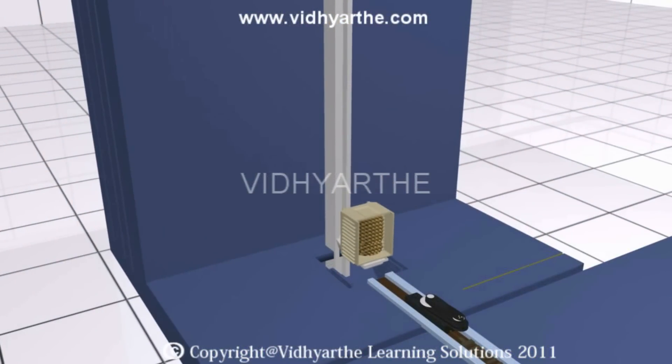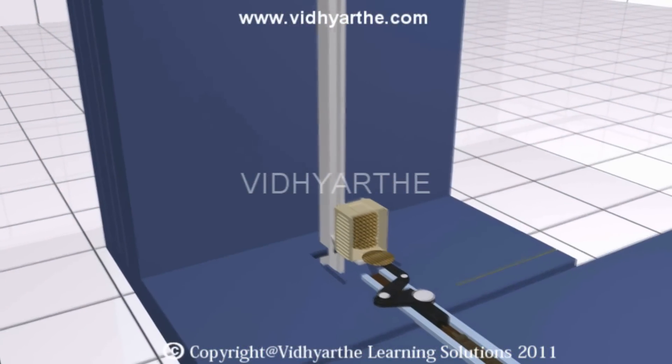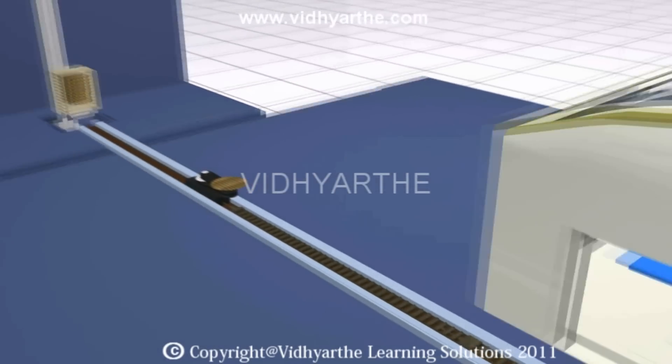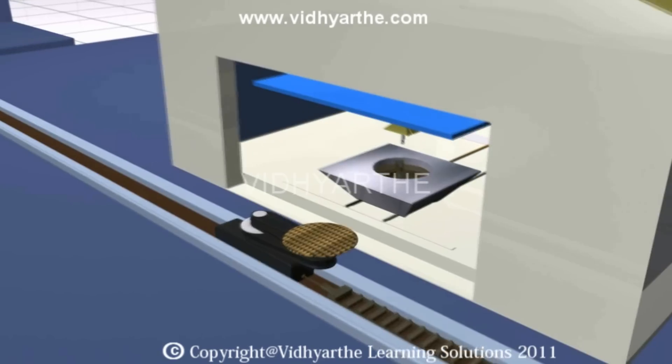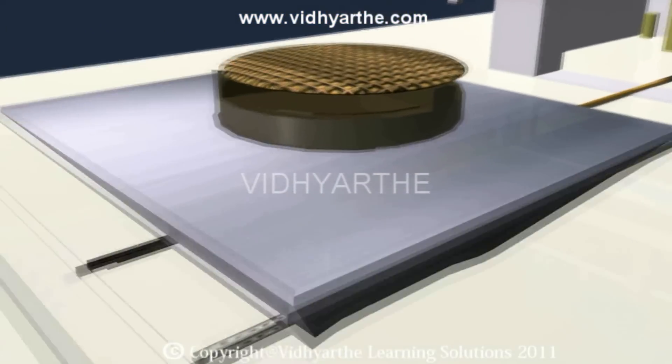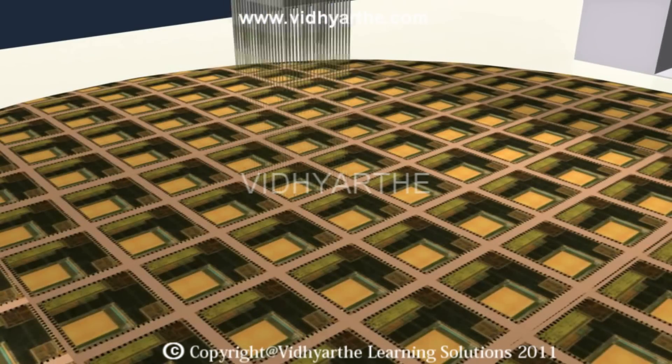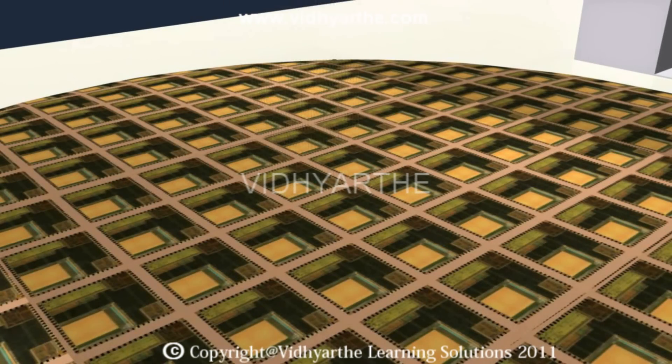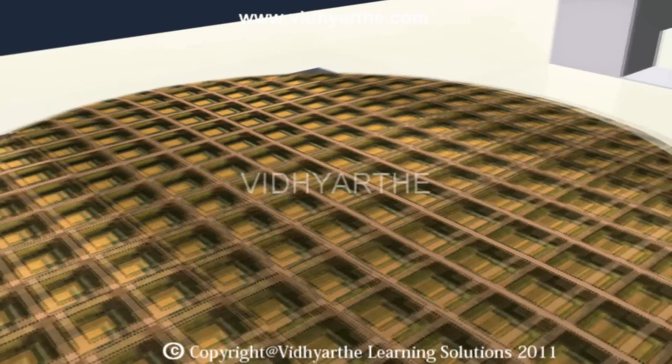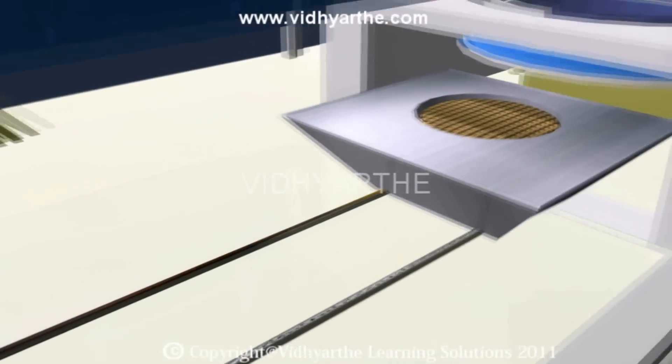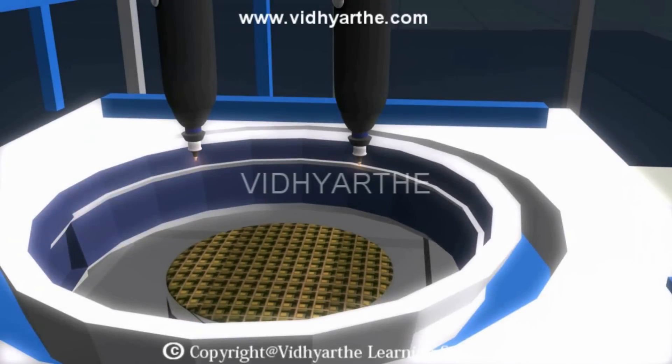The next stage in microchip manufacture is testing and assembly. The first step involves testing each chip in the wafer for manufacturing defects. This helps in early identification and elimination of defective parts before assembly, thereby reducing assembly cost.